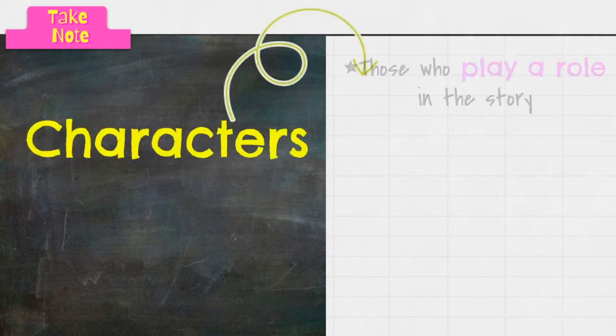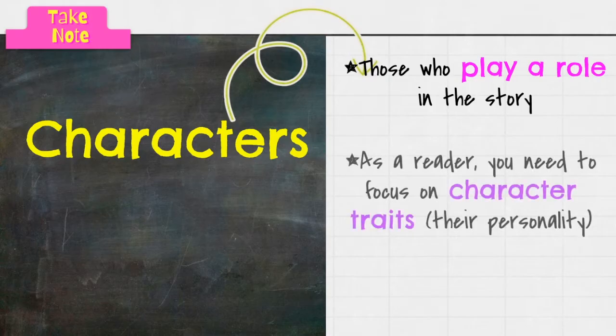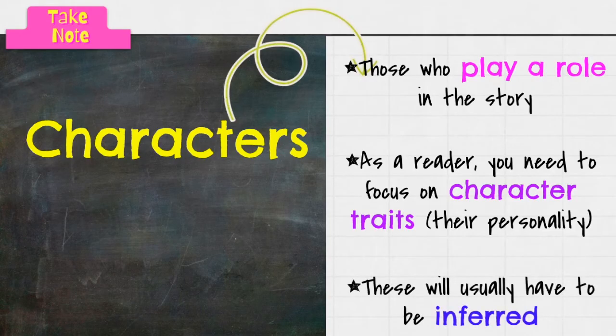All right, so we are back. I'm going to show you what these story elements mean, and we can check it with your definition to see what you already know and maybe what you need to add to it. So first, we have characters. Characters are basically those who play a role in the story. As a reader, you need to focus on the character traits—I call it their personality, how they act—and usually you will have to infer these things.